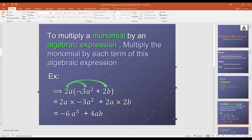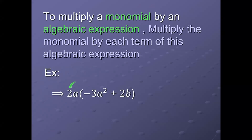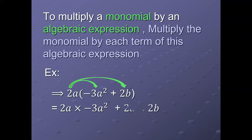First, multiply the monomial with each term in the expression. So 2a times negative 3a² equals coefficient times coefficient: 2 times negative 3 equals negative 6, and a times a² equals a³, giving negative 6a³. Then multiply the monomial with the second term: 2a times 2b equals 2 times 2 equals 4, giving 4ab. So the result will be negative 6a³ plus 4ab.